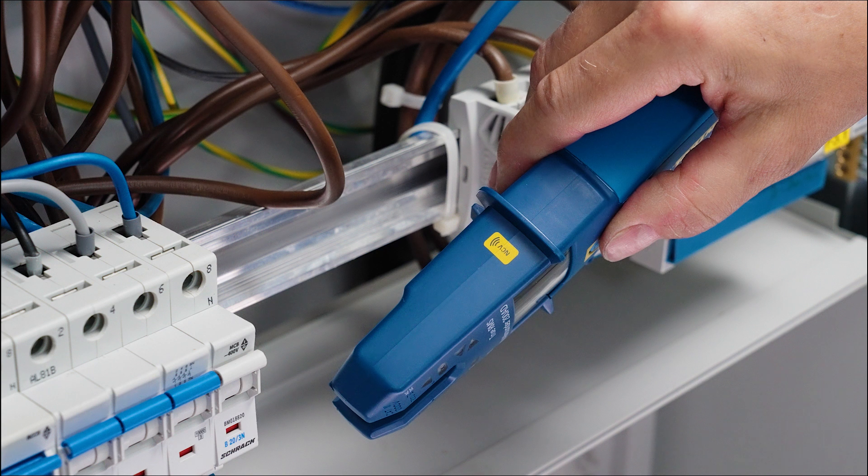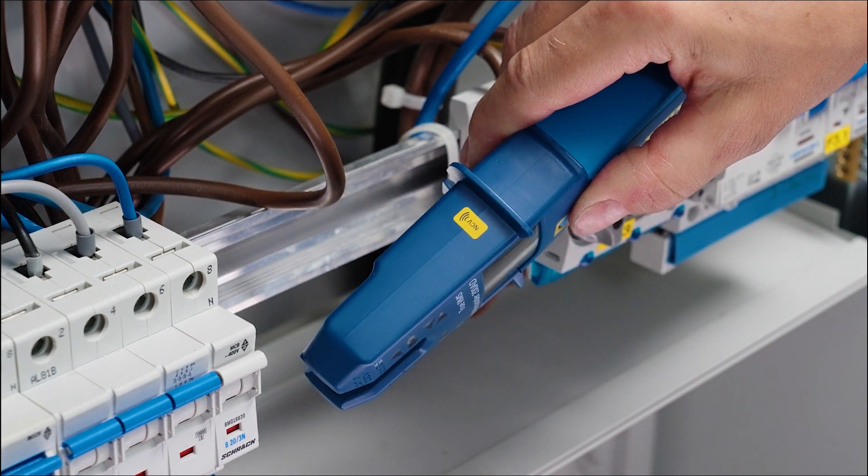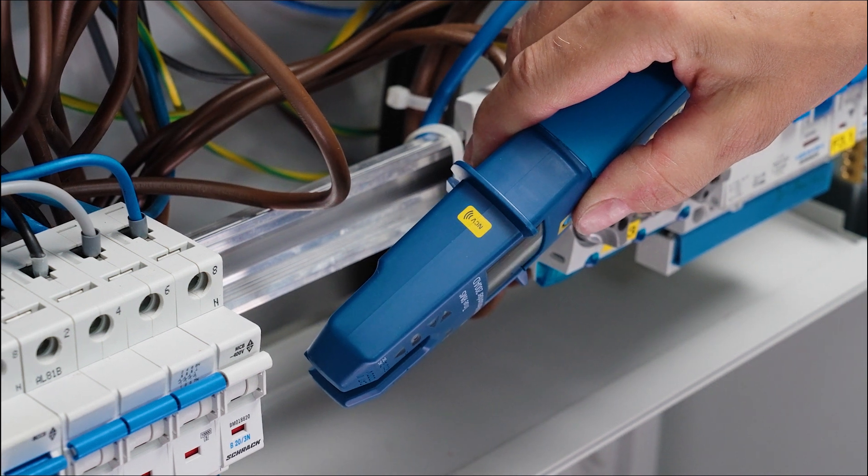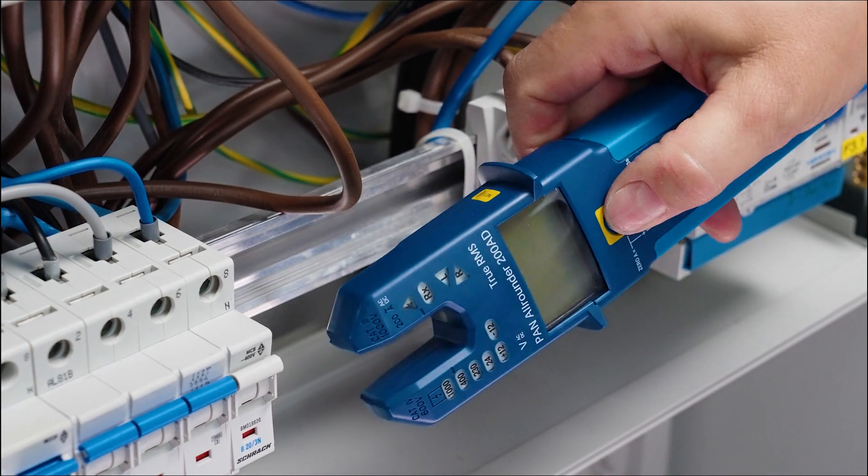In order to check cables for live voltage even through the insulation, Pan Allrounder has an inbuilt non-contact voltage tester, which is marked on the side by a yellow symbol.